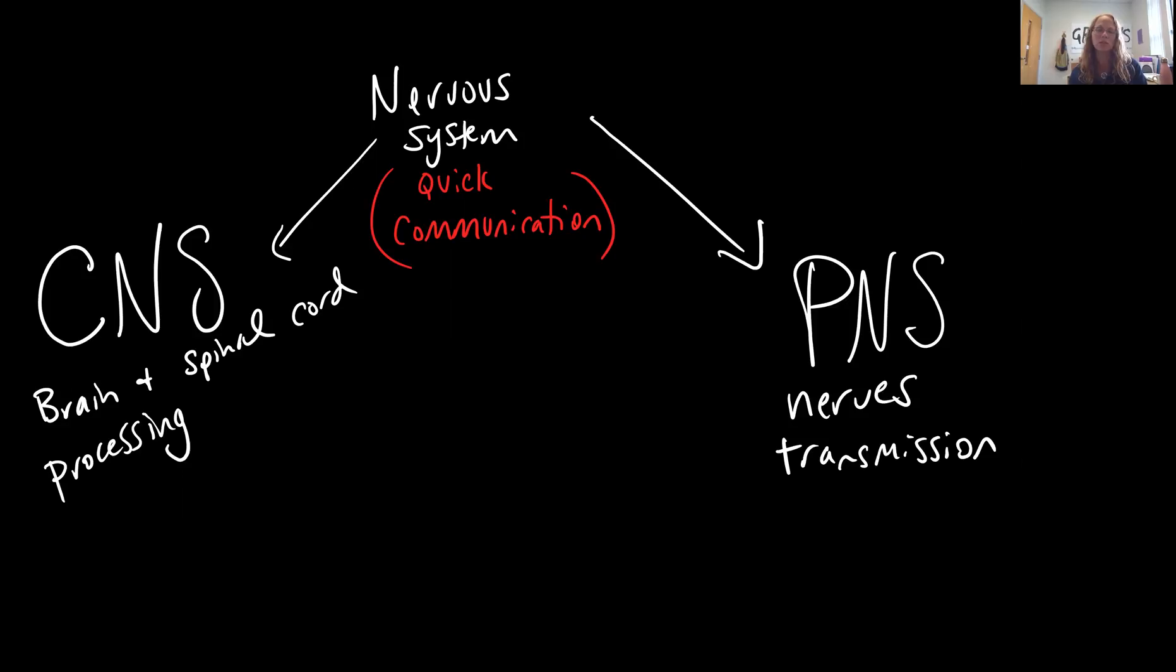The PNS or peripheral nervous system is composed of your nerves. And think about information as basically traveling back and forth. So you're going to have some sensory nerves and motor nerves coming off of the brain stem. And then as we're looking at the brain stem again, and the spinal cord, you'll have mixed nerves, which are containing both sensory and motor neurons.